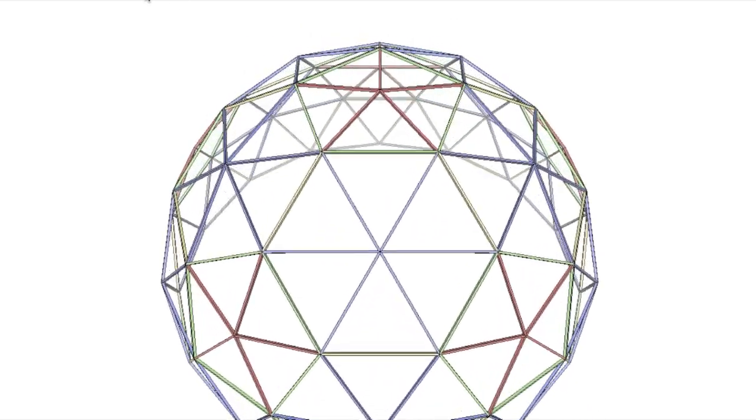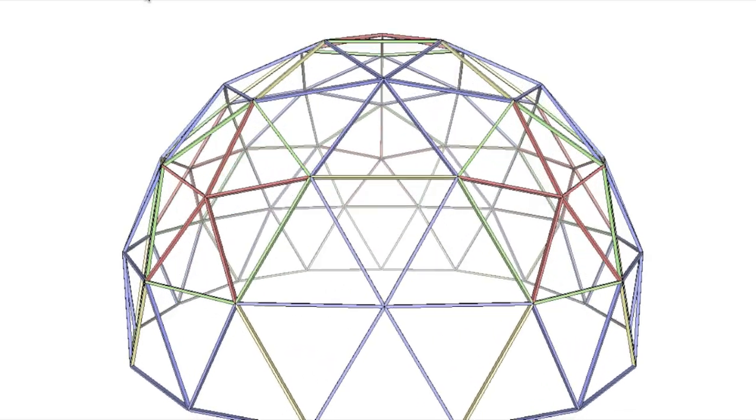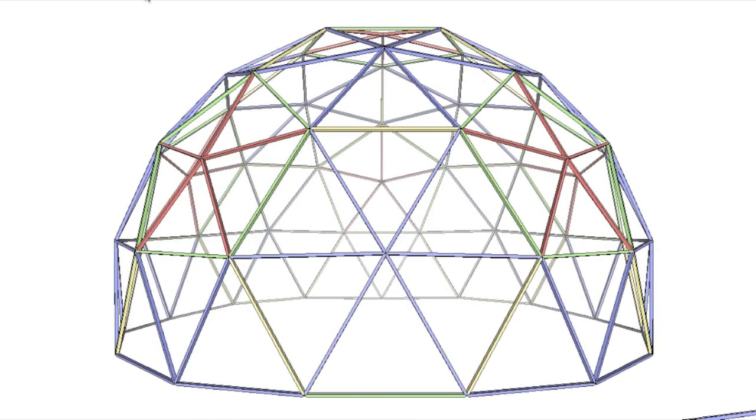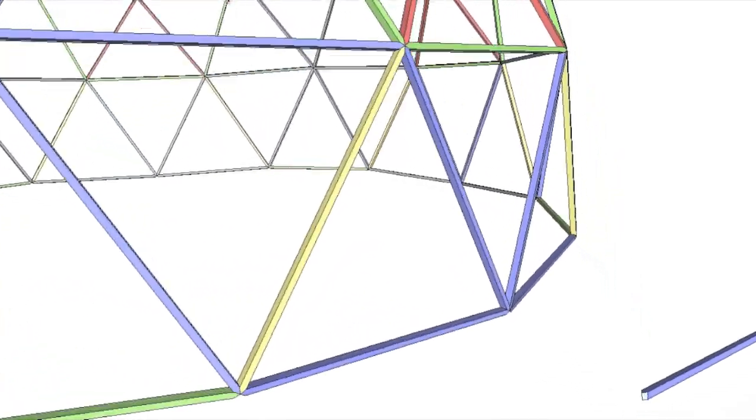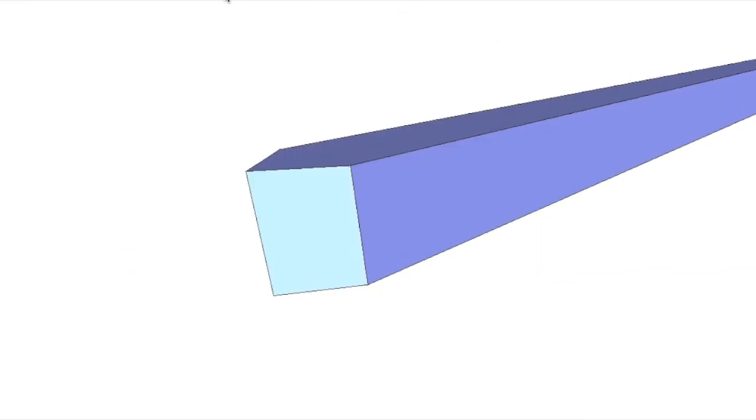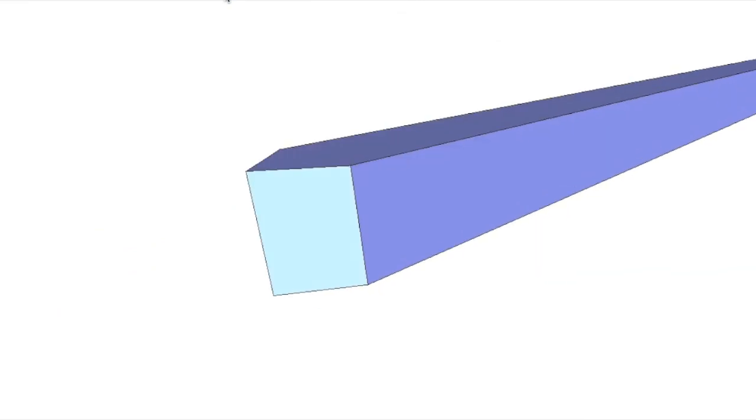For this example I've drawn up a three-frequency dome and how it would be built using the arrowhead method. If we take a look at a strut end, there's no hubs, there's just this angle cut on the end of each strut.